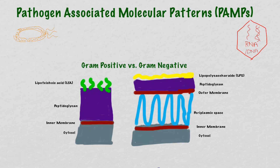Some examples of PAMPs are things like flagella of parasites and motile bacteria, zymosan in the cell wall of fungi, and single-stranded DNA or double-stranded RNA in viruses. Bacteria provide many of our PAMPs owing to their complex cell wall structures. Gram-positive bacteria have a thick peptidoglycan that has something called lipoteichoic acid, which aids in adherence to host cells. Gram-negative bacteria have a relatively thin peptidoglycan, but they do have a coating of lipopolysaccharide, or LPS.